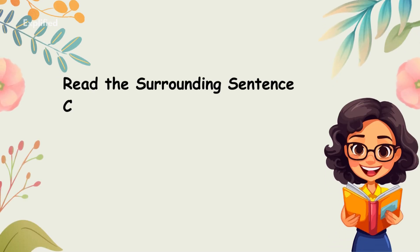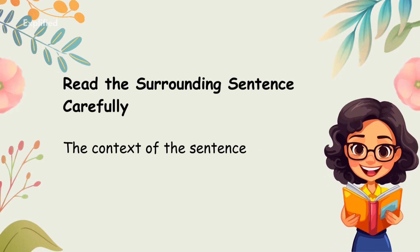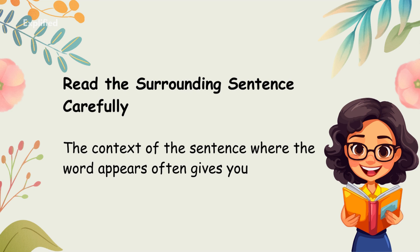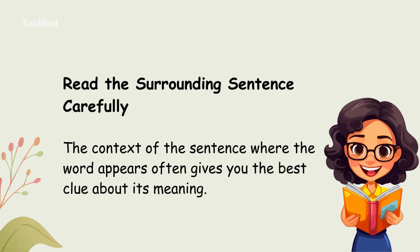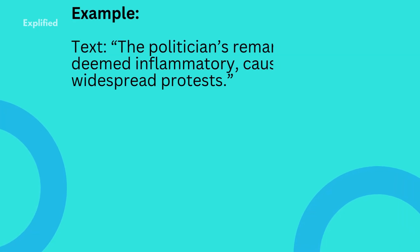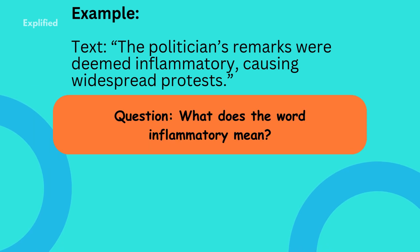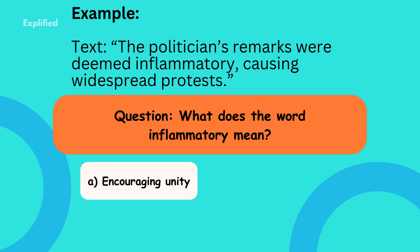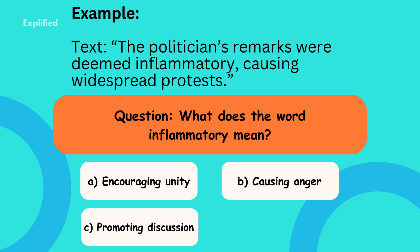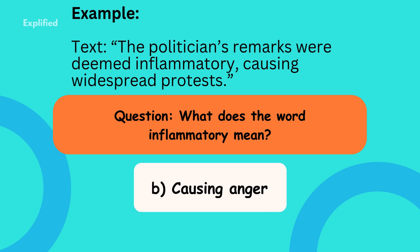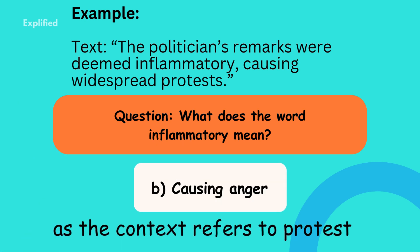Tip 1: Read the surrounding sentence carefully. The context of the sentence where the word appears often gives you the best clue about its meaning. Example — text: 'The politician's remarks were deemed inflammatory, causing widespread protests.' Question: What does 'inflammatory' mean? A. Encouraging unity. B. Causing anger. C. Promoting discussion. D. Ignoring facts. Answer: B — Causing anger, as the context refers to protests.